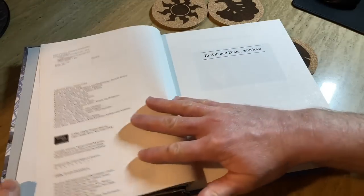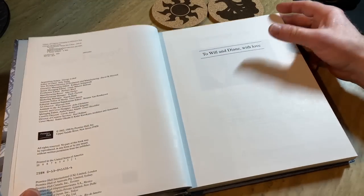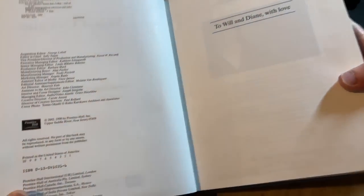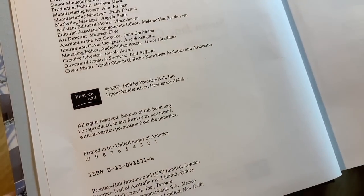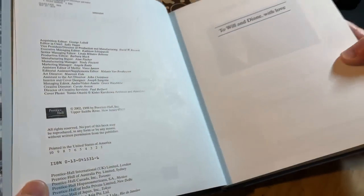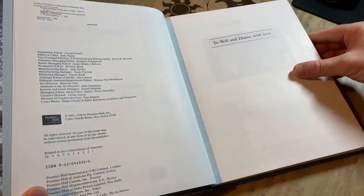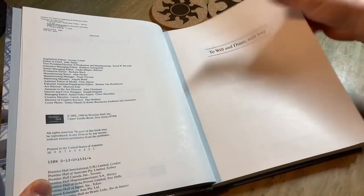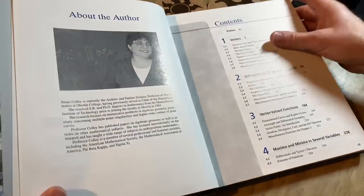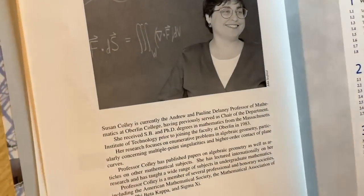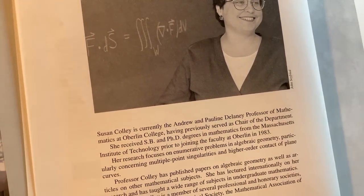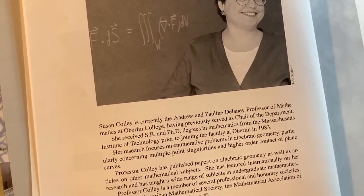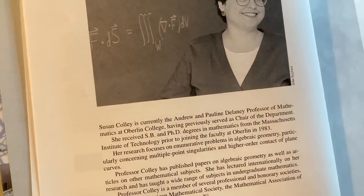Let's just open it up to Will and Diane with Love. That's the dedication. And this one is from 2002 and 1998. So I guess 1998 is probably the first printing of this book, I believe. This is the second edition. And there is the legend about the author. Susan Colley is currently the Andrew and Pauline Delaney Professor of Mathematics at Oberlin College. Cool. Having previously served as chair of the department. That's really interesting.